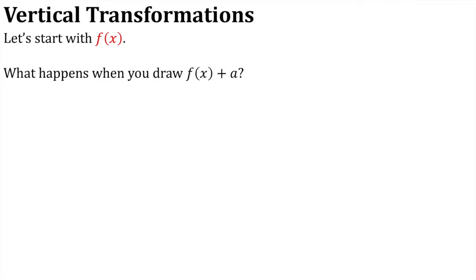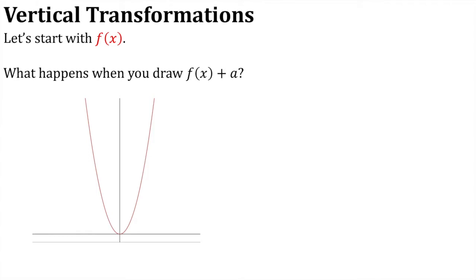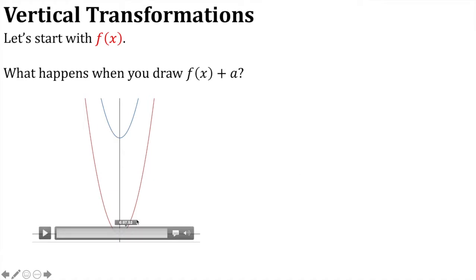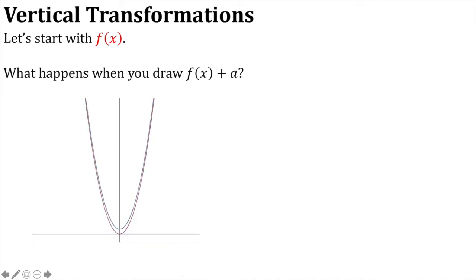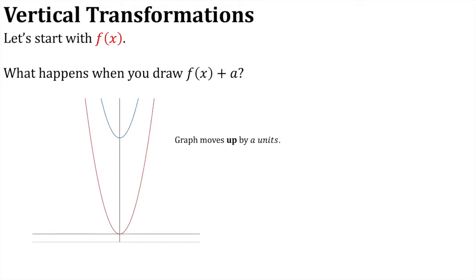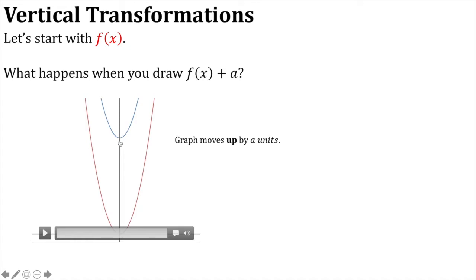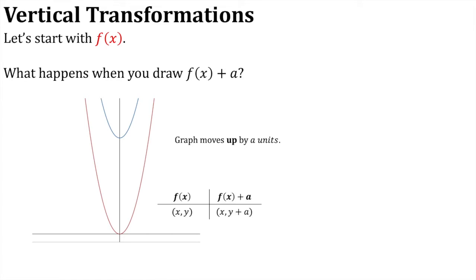Starting with f of x — what happens when you draw f of x plus a? Hopefully you can see that the graph moved up by a units. We don't know what a is; we're just using a general example. The origin, which was at (0, 0), has moved up to (0, a). So we've influenced the y-coordinates by a — we've added a onto each of the y-coordinates.